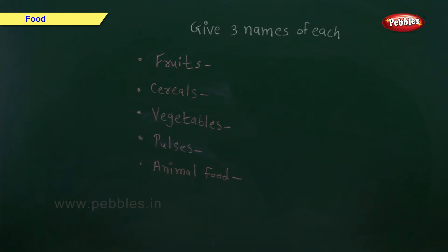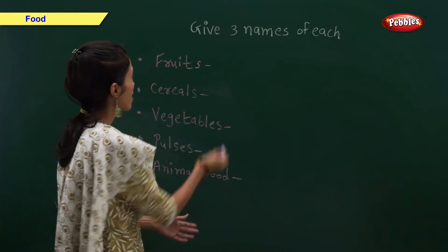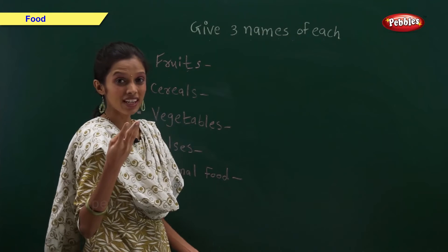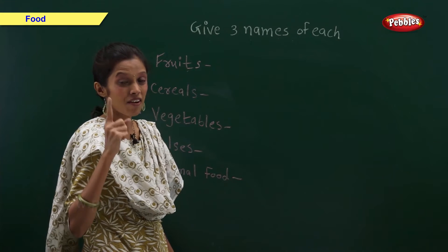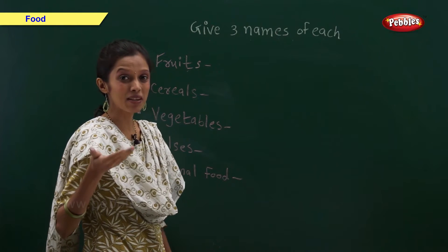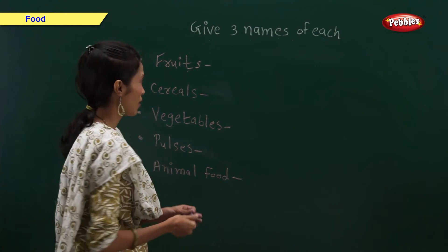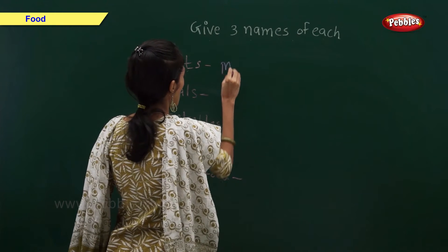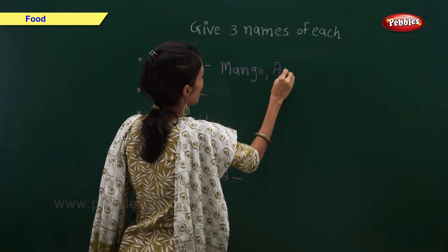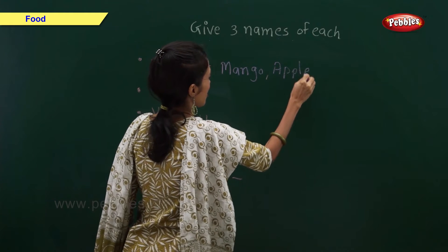Give three names of each. Fruits — give me three examples of fruits. Remember, I have shown you the pictures. Come on fast, tell me. Yes, you are right. Mango, apple, and orange.